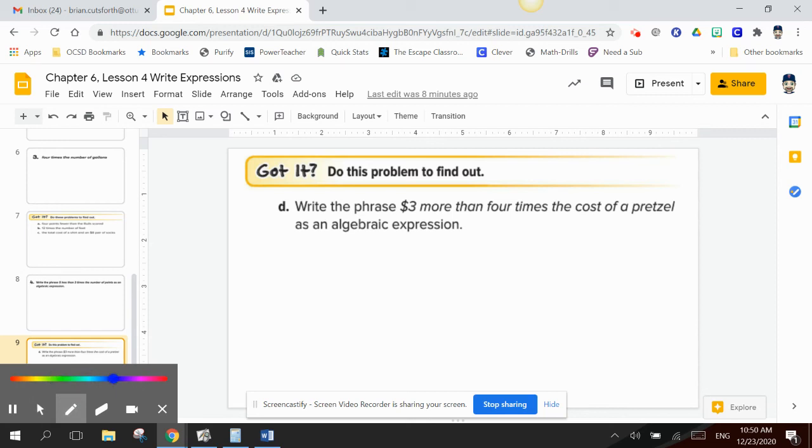And our last example today says, please write the phrase $3 more than four times the cost of a pretzel as an algebraic expression. Well, what don't I know? $3 more than four times the cost of a pretzel. I don't know the cost of a pretzel. That's my variable. As I work backwards, times. Times tells me to multiply. What am I going to multiply the cost of the pretzel by? That would be four. More than. More than tells me to add.